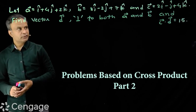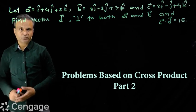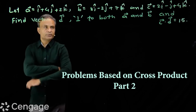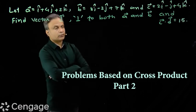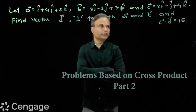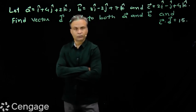Okay, now we have this question. Here vectors a, b, and c are given. Vector a is i plus 4j plus 2k, vector b is 3i minus 2j plus 7k, and vector c is 2i minus j plus 4k.